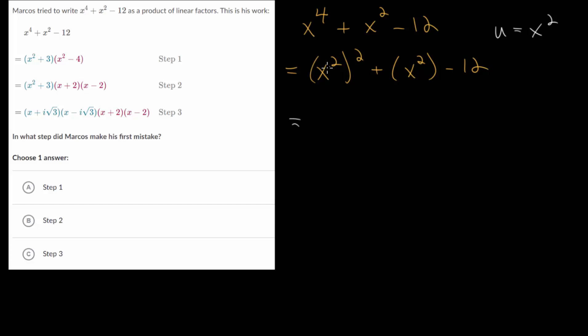We get u squared plus u minus 12. By transforming this using this substitution u equals x squared, this now becomes a quadratic equation, and we can factor this using the techniques that we've learned for factoring quadratics.